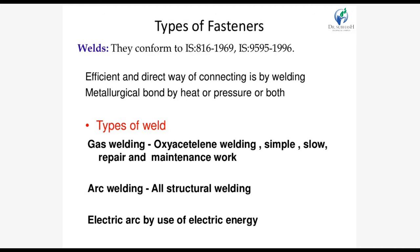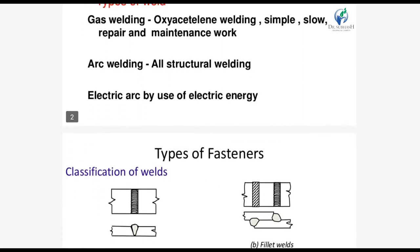According to these codes, an efficient and direct way of connecting is by welding — a metallurgical bond created by heat or pressure or both. The various processes of arc welding used in structural steel applications are: gas welding (simple, slow, used for repair and maintenance), arc welding (suitable for all types of structures), and electric arc welding using electric energy.